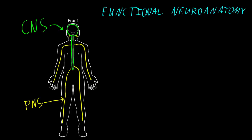Now if there's dysfunction of parts of the nervous system — let me just write a red X through part of the peripheral nervous system here, or a red X through part of the central nervous system up here — if there are areas of the nervous system that aren't working properly, we can get different patterns of abnormalities of the functions of the nervous system. And those patterns of functional abnormalities we call syndromes.